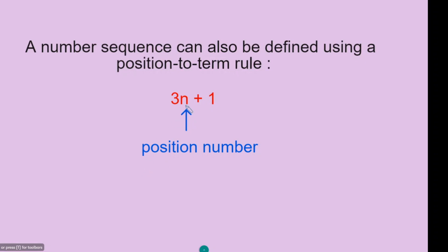So the number becomes 3 times 1 is 3, and 3 add 1 is 4. For the second term, n will be 2. So you have 3 times 2 equals 6, and 6 plus 1 equals 7. So the second number in the sequence is 7.